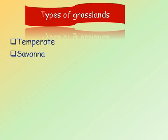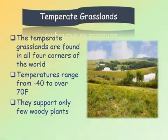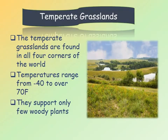What are the types of grasslands? Grasslands are of two types, namely temperate grasslands and the savannah. The temperate grasslands are found in all four corners of the world. The temperatures range from minus 40 to over 70 degrees Fahrenheit.